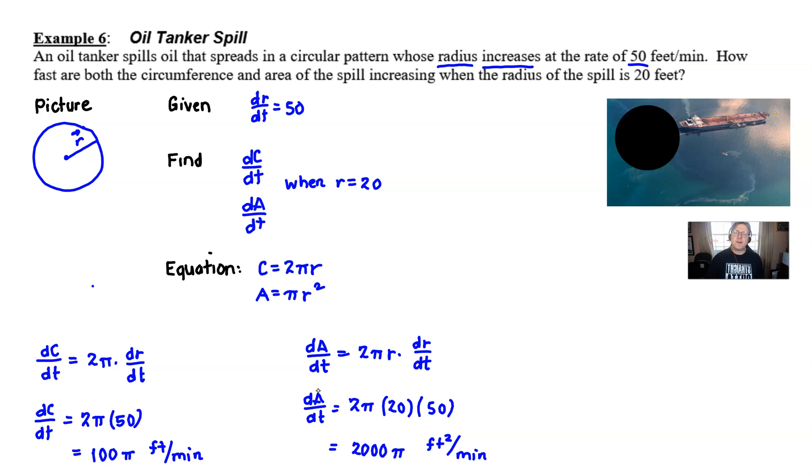There's our oil tanker spill problem using the idea of the circle. It's our first one that used the circle as the main equation. Circles are going to be pretty easy because there's only one variable r in them. Stick around. We've got lots more things coming up with some triangles, we've got some rockets taking off and some further examples. So we look forward to seeing you there. Thanks for joining.